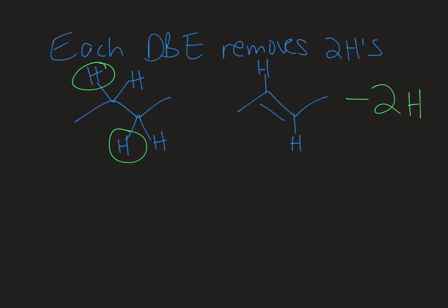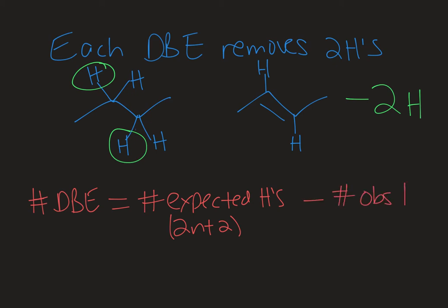So if we look at a formula for double bond equivalents, the number of double bond equivalents in a formula that we're given is equal to the number of expected Hs, so that would be the 2n plus 2 rule, minus the number of observed Hs, so what we're given in our chemical formula. And then we divide that all by 2 because we lose two Hs every time there is one double bond equivalent.